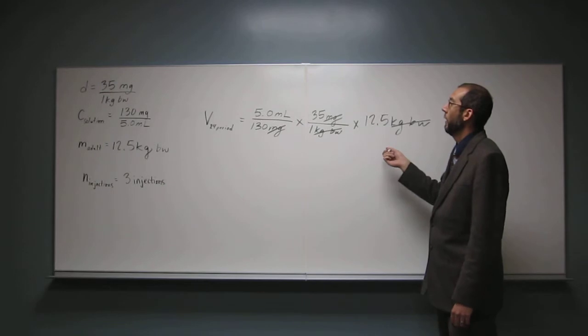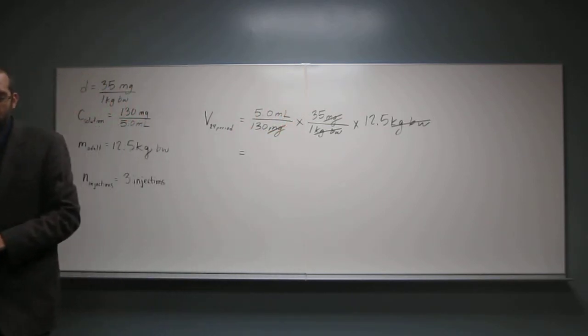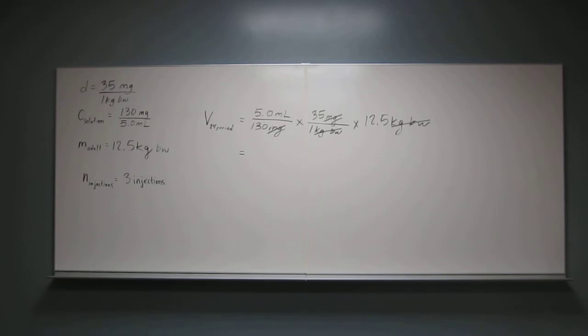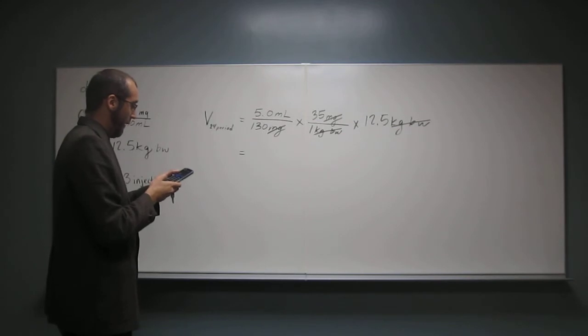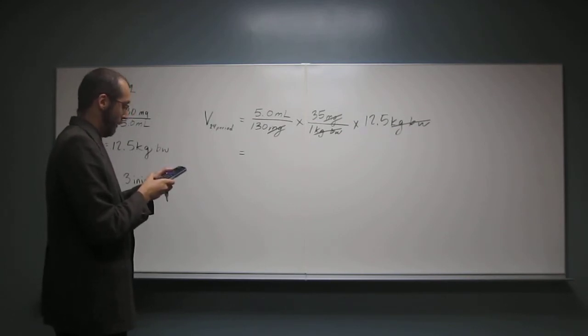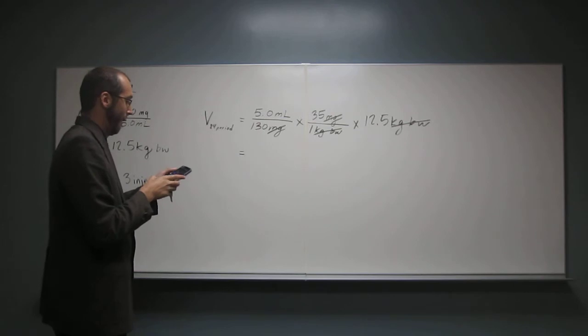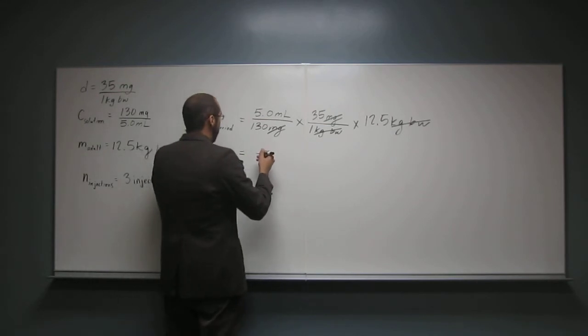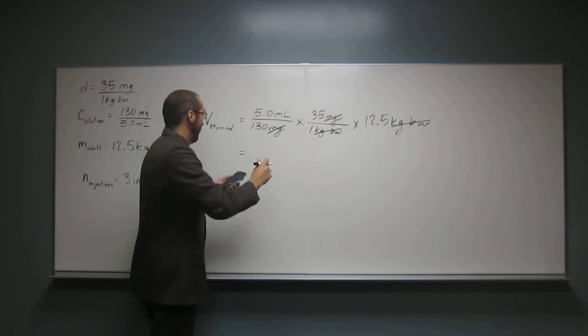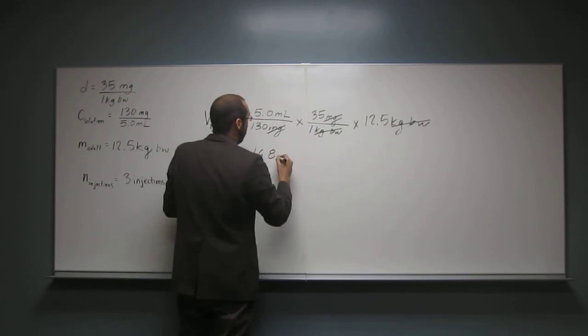So what does that mean? The volume in a 24-hour period is going to be whatever this expression comes out to. And I didn't bring my calculator. Do you mind if I use your calculator? So the way I do it is 5 times 35, and then times 12.5, and then divide that by 130. And so to two significant figures, we'll just go out for right now, and then we'll do the two significant figures in a little bit. We'll just say 16.8 milliliters.